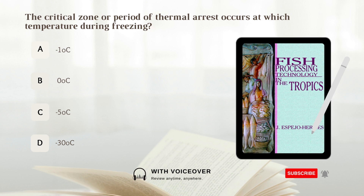The critical zone or period of thermal arrest occurs at which temperature during freezing? A. Negative 1 degree. B. Zero degree. C. Negative 5 degrees. D. Negative 30 degrees. Answer: A. Negative 1 degree Celsius.